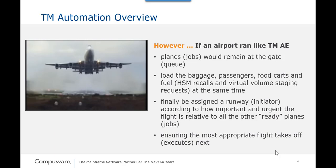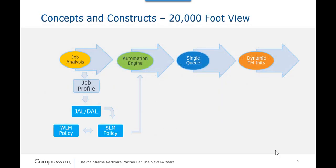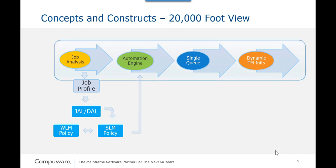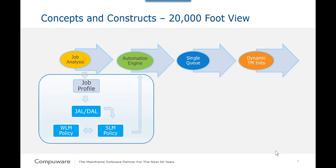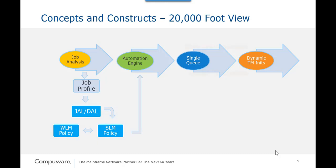So, how does Throughput Manager automation work? Throughput Manager automation consists of four main concepts: job analysis, the automation engine, a single queue, and dynamic Throughput Manager initiators. Throughput Manager communicates business and system-related information via constructs that provide the rules-based job trajectory and policy-driven service goals required for intelligent, automated decisions throughout the batch process.